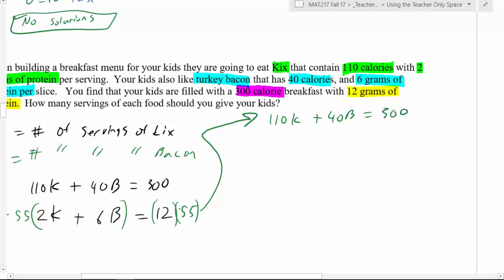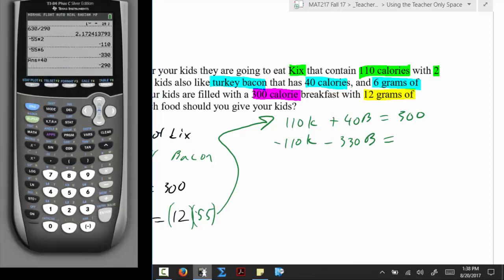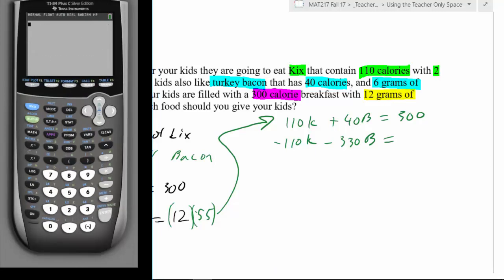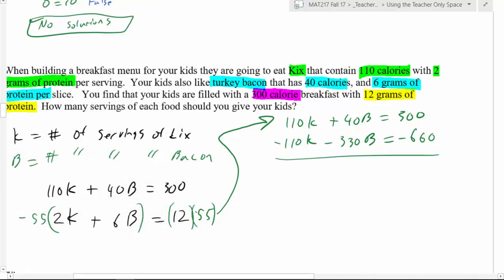And the bottom equation is going to be 55 times, negative 55 times 2, so that's negative 110K, negative 55 times 6, that would be a negative 330B, and 55 times 12, yeah I'm not gonna try to do that one in my head. I have a feeling I'm gonna mess that one up. Let's see here, negative 55 times 12, negative 660, there we go. Now let's go ahead and add these together, see what we're left with. So these come to zero. Alright, let's see, negative 330 plus 40, that would make a negative 290B.